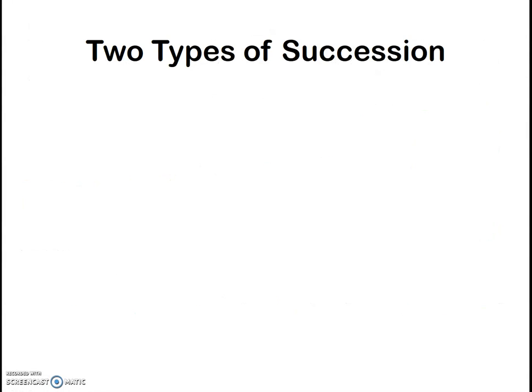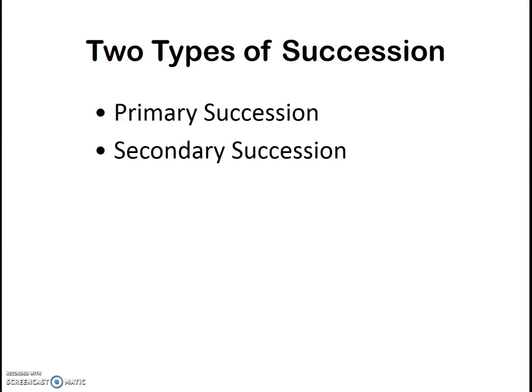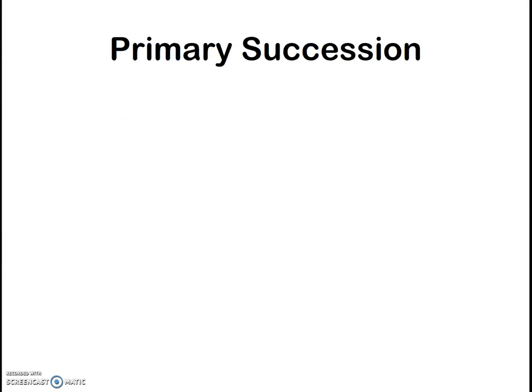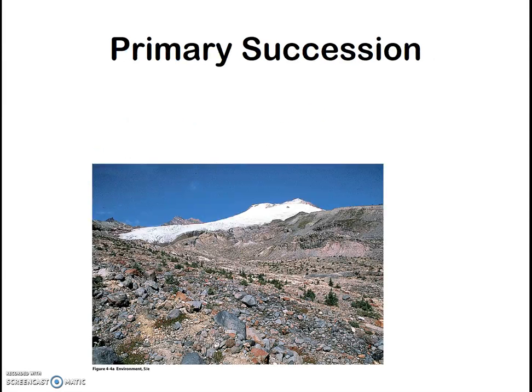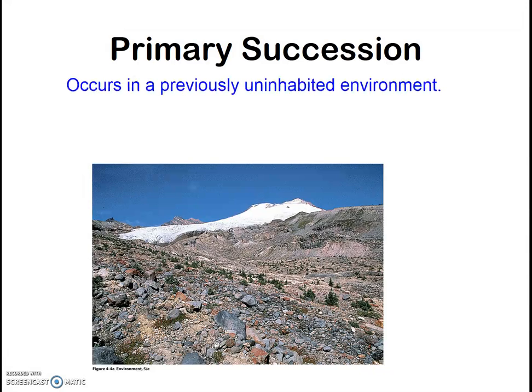Notably, there are two types of succession: primary succession and secondary succession. Primary succession is succession that occurs where there is no existing life. That means there is no soil present, and pretty much it is just bare rock or sterile sand.